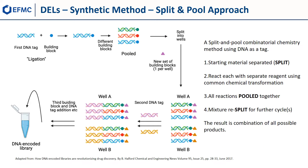What is the basic DNA encoded library method? Using a classic split and pool combinatorial strategy with DNA as the tag, library building blocks are tagged in a ligation step with their own DNA tag. These are then pooled and split into wells where a new set of building blocks are added using the same chemical transformation and a second tag is added. All the reactions are then re-pooled, split again, and another reaction accomplished. Cycles continue until the desired library size is produced. At the end of the exercise, the library contains a mixture of compounds with all possible building block combinations, all tagged with their own unique piece of DNA code.